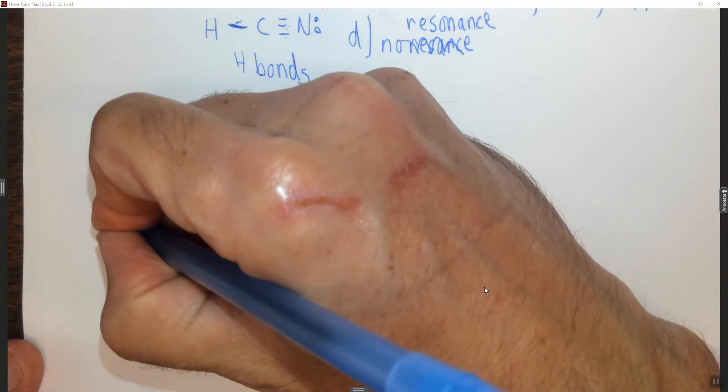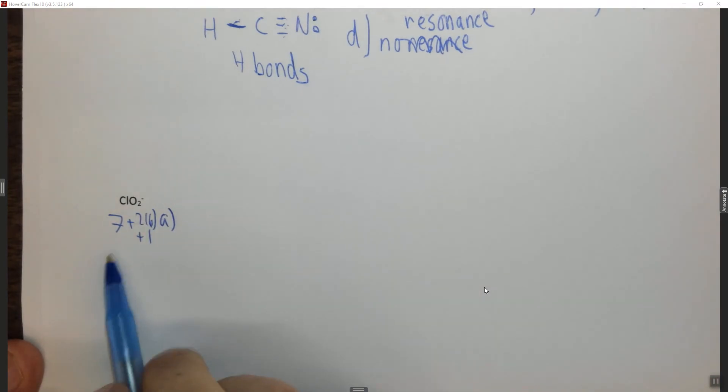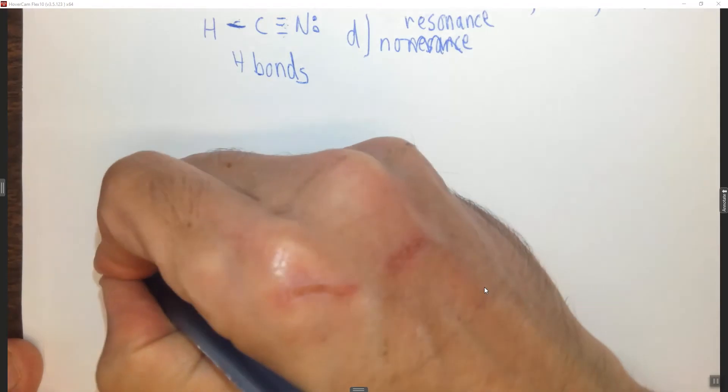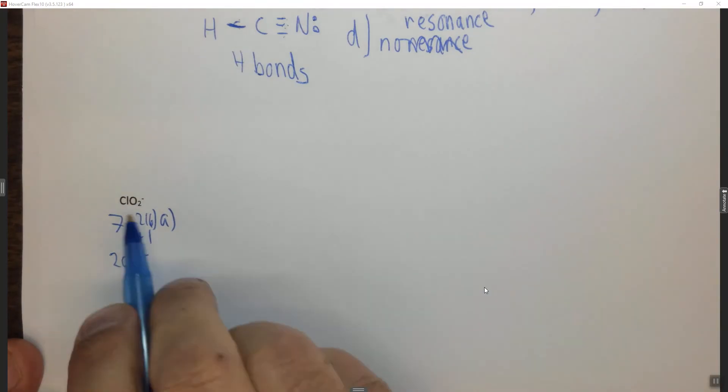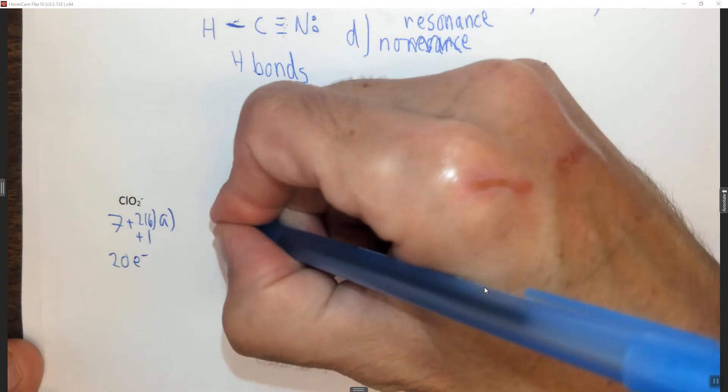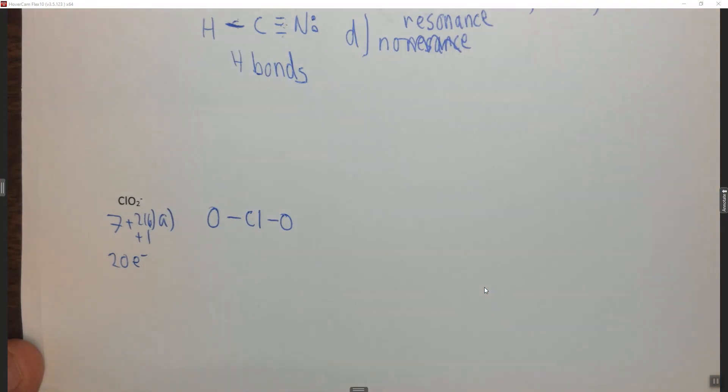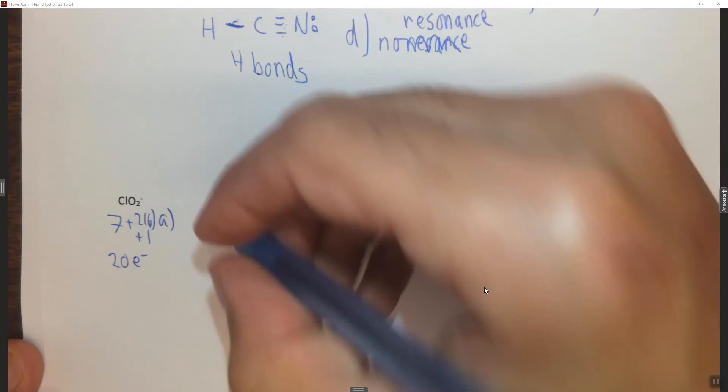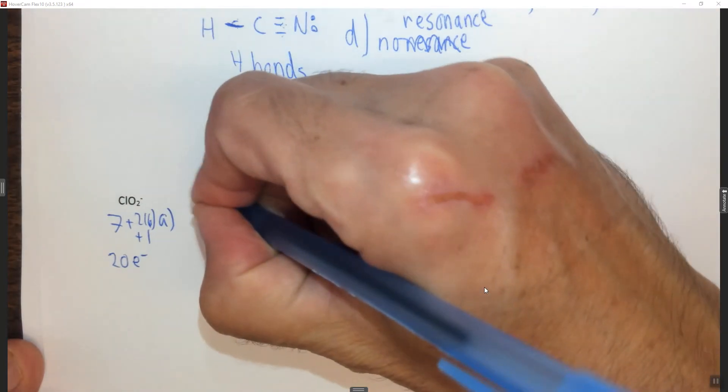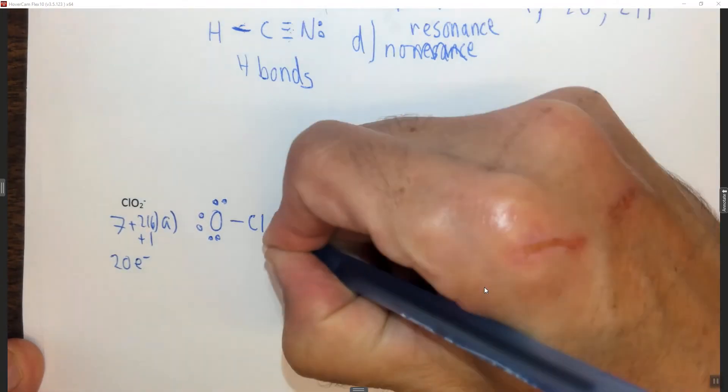So let's look at ClO2 minus. We have 7 plus two times 6 plus 1 because it's minus charged. So we have a total of 12, 19, 20 electrons. I'm going to put the least electronegative atom in the middle. We do need to know that Cl is slightly less electronegative than oxygen, and we've now used 2, 4 of our electrons. Now we want to start filling the octets of the outside atoms. So 2, 4, 6, 8, 10, 12, 14, 16.